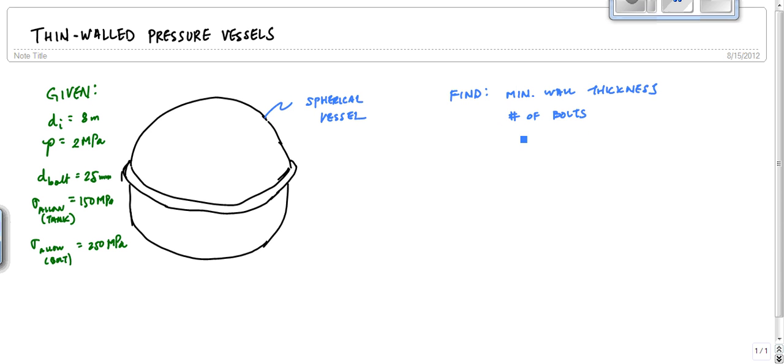We want to find the minimum wall thickness and the number of bolts. And the thing that we have to remember about a spherical pressure vessel is that the state of stress is always the same all throughout. And this sigma is PR over 2T is the stress. This is the state of stress on the wall of the spherical pressure vessel. It's like the longitudinal stress in a cylindrical pressure vessel.